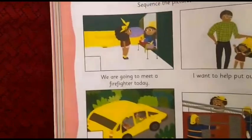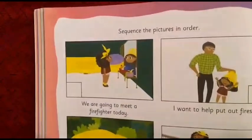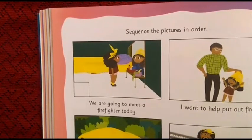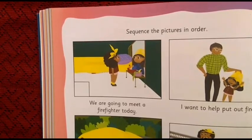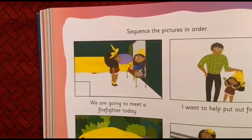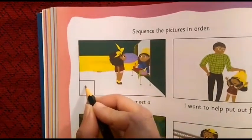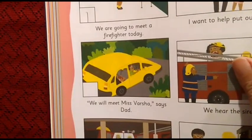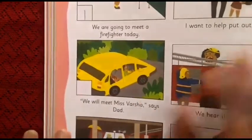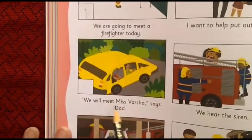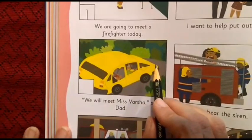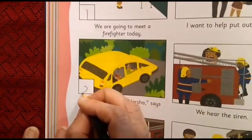Now we are going to sequence them. First, if you see the story, which picture comes first? Where Varsha is standing in front of the mirror and she is saying we are going to meet a firefighter today. So here we are going to write number one. After that, what will come? We will meet Miss Varsha, says Dad — where Dad and Varsha are going to the fire station. So this image will be number two.